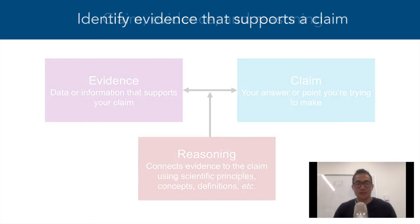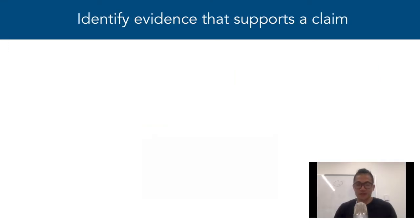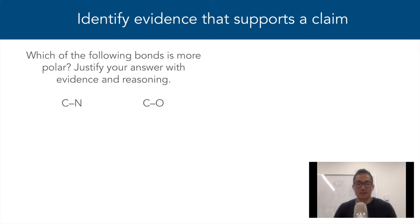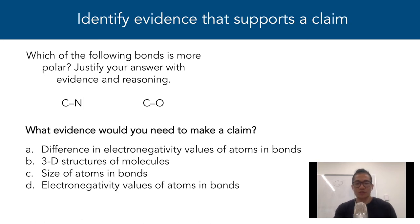So let's practice some of these skills. Let's say on an exam we've been asked the following question: which of the following bonds is more polar? Justify your answer with evidence and reasoning. Let's start by gathering some evidence — what evidence would you need to come up with a claim? Here are some options.